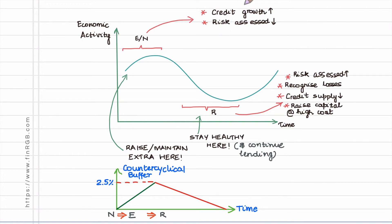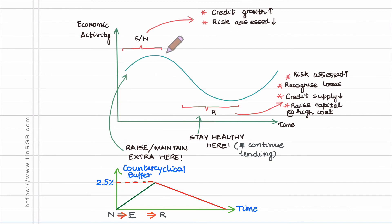This happens because during this period the credit risk management systems of all these banks tend to under-assess the risk of lending to potential borrowers. These systems spit out probabilities of default which are lower than long-term averages, and that is what accelerates credit growth.